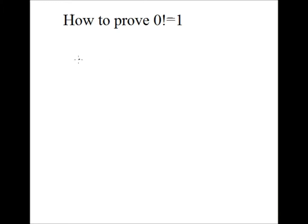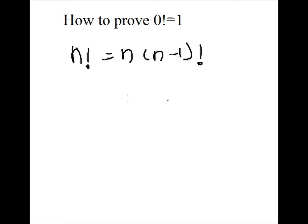How to prove 0 factorial is equal to 1? Now, n factorial is equal to n into n minus 1 factorial. We can write n minus 1 factorial as: n minus 1 factorial is equal to n factorial upon n.